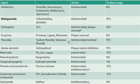Moving to 'B', bisbiguanides include chlorhexidine and alexidine, which have antimicrobial action and are currently in use. 'C' — detergents — mainly sodium lauryl sulfate (SLS), found in toothpaste, has antimicrobial and probable plaque removal action and is in current use. 'E' — enzymes — mainly protease, lipase, and dextranase, act on plaque control but are no longer available in products.